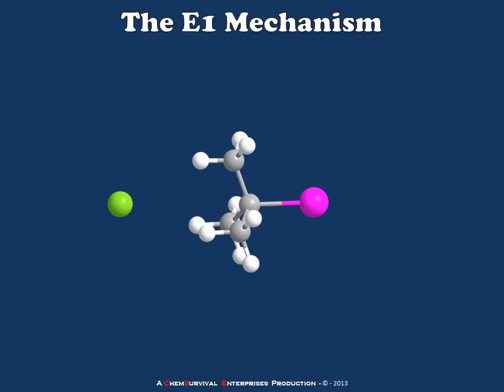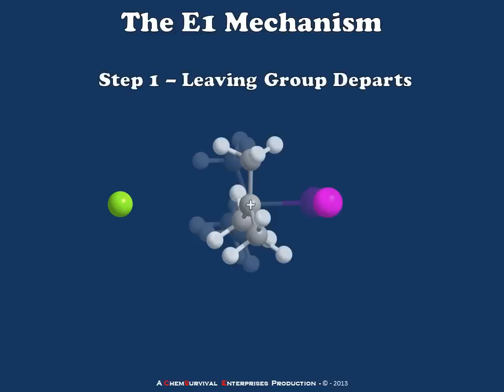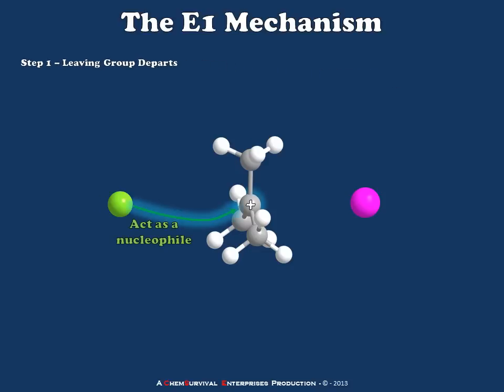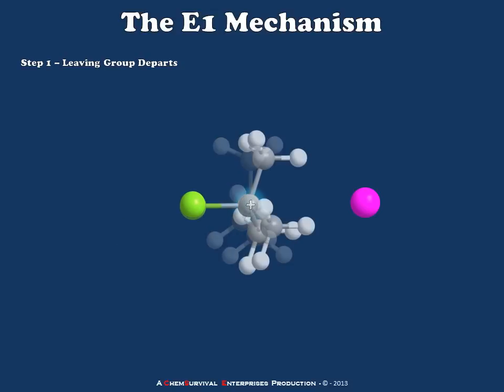So let's change this back to a simple green sphere so we can watch the reaction occur. In the case of the E1 mechanism, just as in the SN1 mechanism, the reaction initiates with the departure of the leaving group. When this occurs, a carbocation is formed. Now we have several options of what we can do with this carbocation. The first of which is we can have a nucleophilic attack — this would be an SN1 reaction. So if I have a relatively good nucleophile, I can expect a substitution product to form.